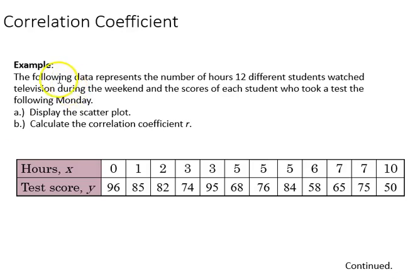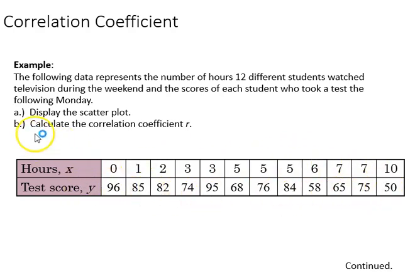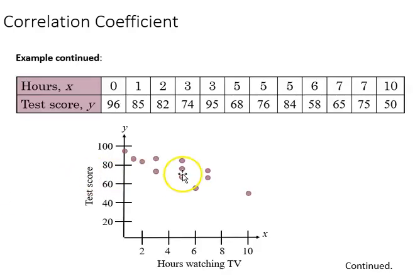Here's a correlation where we're going to look at the relationship between the number of hours 12 students watch television and the scores of their tests on the following Monday. Here's the hours in this row, and here's the test scores in this row. We're going to display the scatter plot and calculate our correlation coefficient. The scatter plot shows the pairs of data points between x and y, and there we can see what looks like a moderate negative relationship taking shape.